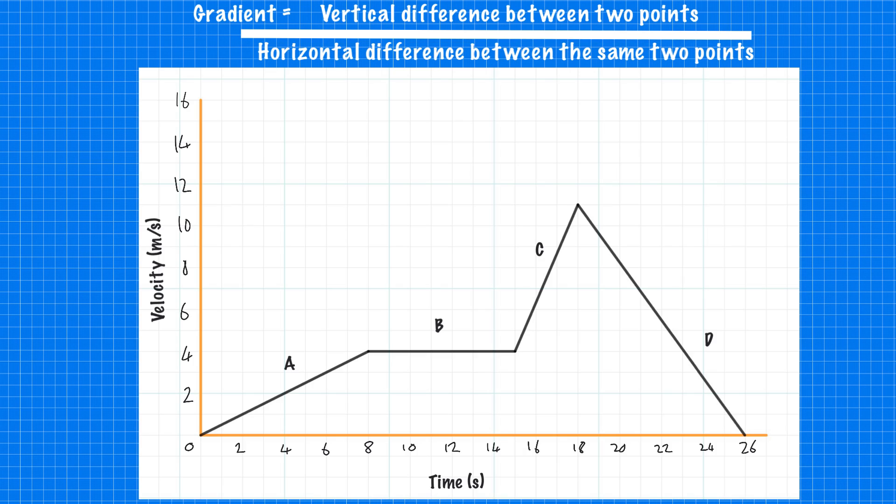So we're going to look at calculating the acceleration during section A. So if we look at section A, we mark it off there. We have a vertical height, so a vertical difference of four, that is metres per second. We have a horizontal distance, just reading off the bottom scale, of eight seconds. So our acceleration is the vertical divided by the horizontal. So we have four divided by eight. If we add on the units, it makes sense. Four metres per second divided by eight seconds, which means an acceleration of 0.5 metres per second squared for that first section A.